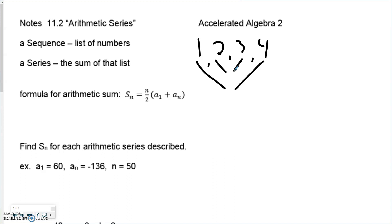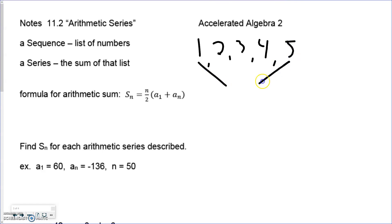What happens if we don't have an even number of terms? Let's put in 5 terms and see if the pattern still works. If we put 1 and 5 together we get 6; 2 and 4 give 6. But there's a 3 in the middle. The formula handles this: n over 2 gives 5 over 2, which is 2 and a half. Two and a half 6s — half of 6 is 3 — and everything still works.